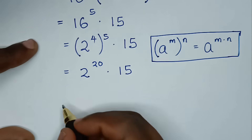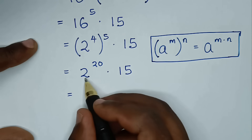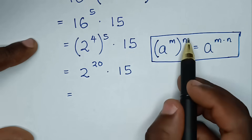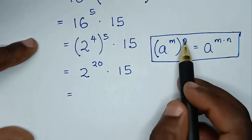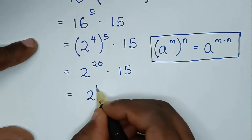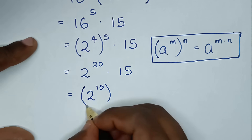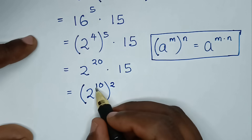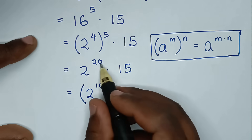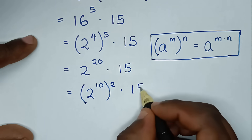Then times this 15. Then in the next step, from 2 power of 20, we change into this form. So 2 power of 20 is the same as 2 power of 10, bracket power of 2, because 10 times 2 is 20. Then times this 15.